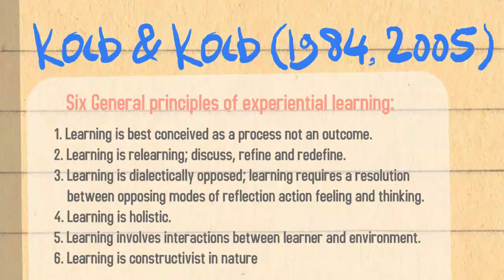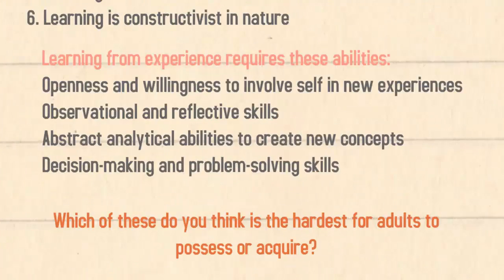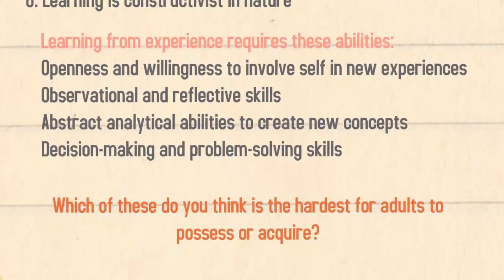They also said that learning from experience requires certain abilities: an openness and willingness to involve oneself in new experiences; observational and reflective skills; some abstract analytical abilities to create new concepts; and some decision-making and problem-solving skills. Which of these do you think is the most difficult for adults to possess or acquire? Think back to personality — are some of these traits unchanging, or are they things we can learn and improve upon?